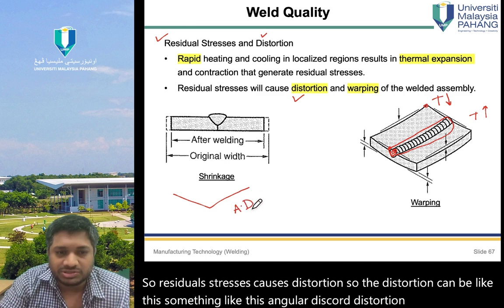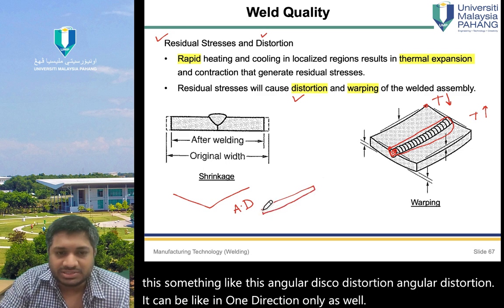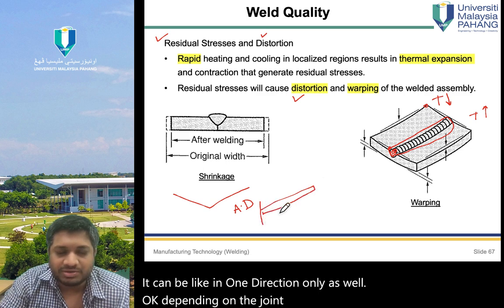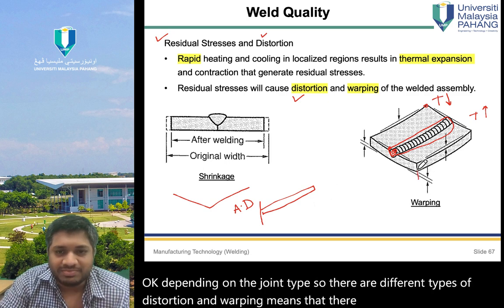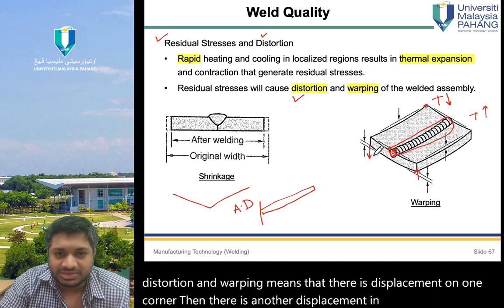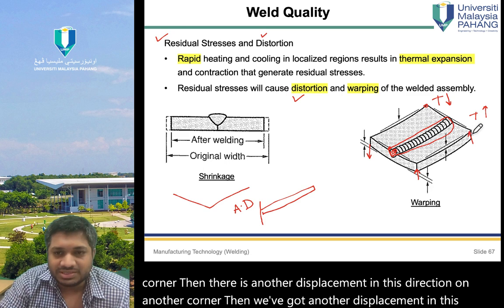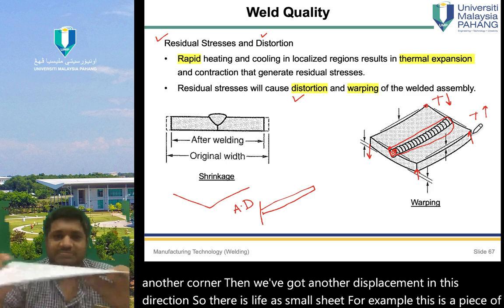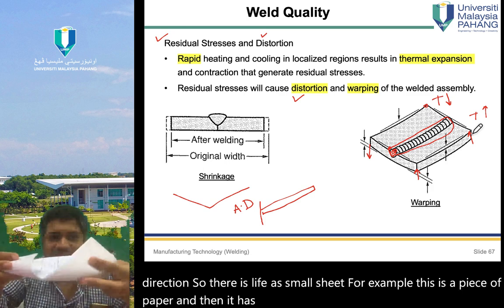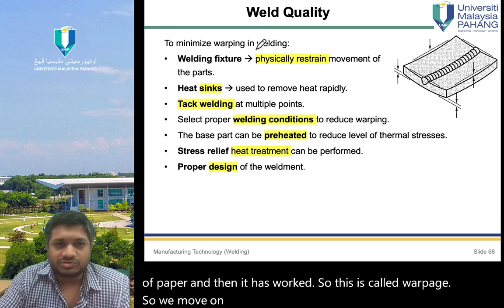The distortion can be angular distortion in one direction, depending on the joint type. Warping means there is displacement in different corners — for example, like a piece of paper that has warped. This is called warpage.